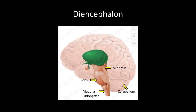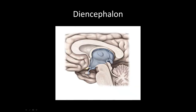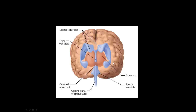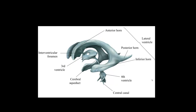Next we're moving on to the diencephalon, highlighted in green — anything containing the word thalamus. Here it is from a hemisection view highlighted in blue, and from an anterior view. The ventricular system wraps around the diencephalon. This is the thalamus, which is the largest part of the diencephalon, and the ventricular system kind of surrounds it.